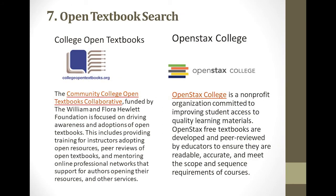The seventh search type is Open Textbook Search. College Open Textbooks: The Community College Open Textbook Collaborative, founded by the William and Flora Hewlett Foundation, is focused on driving awareness and adoption of open textbooks. This includes providing training for instructors adopting open resources, peer reviews of open textbooks, and a mentoring online professionals network supporting authors in opening their resources.